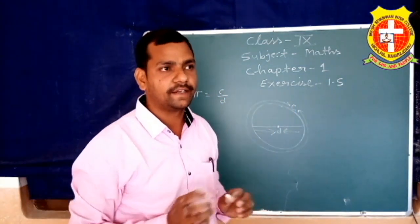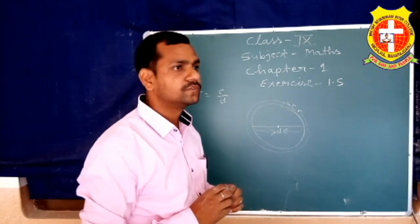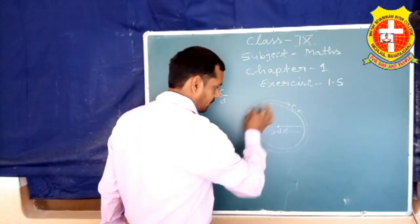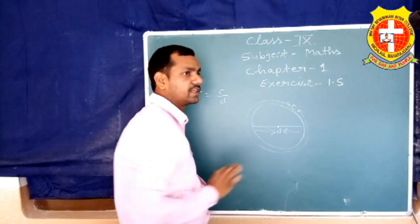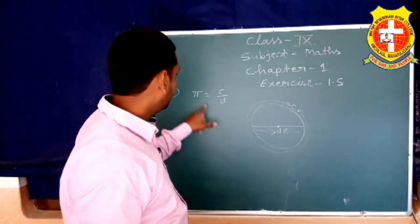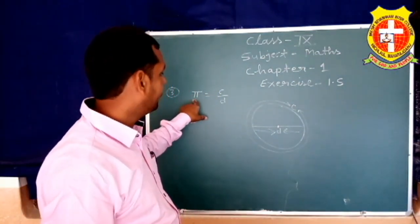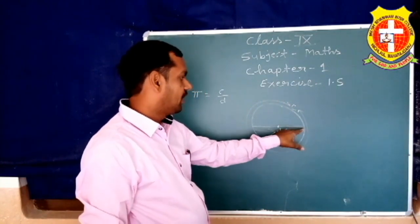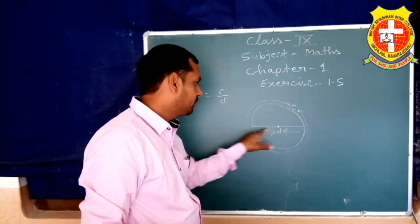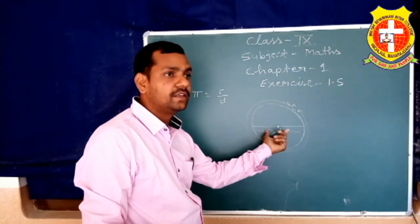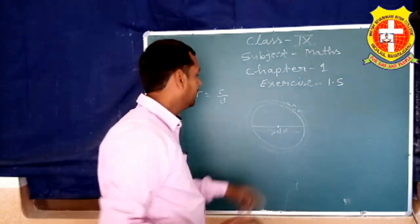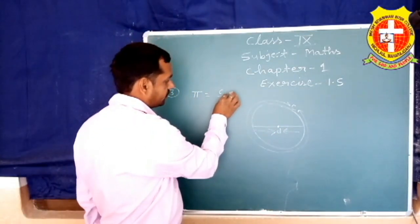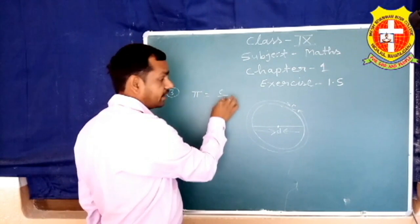मापन में थोड़ा सा अंतर आएगा — यानि अलग-अलग मान आ सकते हैं और मापन में थोड़ी सी mistake हो सकती है। D की मापन में भी यही बात है — इसमें mistake और actual मान अलग होते हैं, इसीलिए अंतर्विरोध प्रतीत होता है।